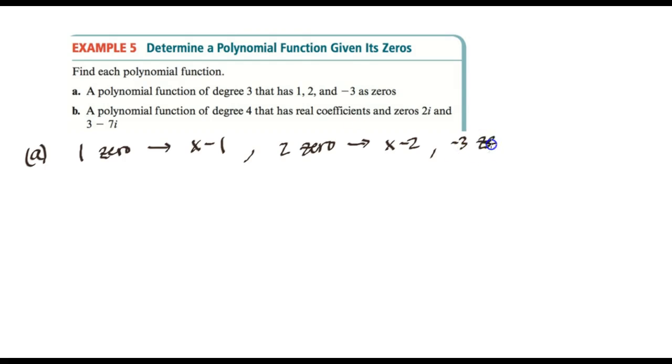And then similarly, if negative 3 is a zero, then x – and remember, it's always the opposite. So since we have negative 3, it's going to be plus 3 as a factor. So factor means we're going to have products here. We're going to have x minus 1, x minus 2, and x plus 3 all multiplied together. So the function P(x) is x minus 1, x minus 2, and x plus 3.